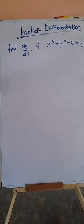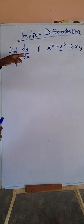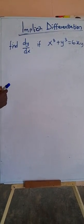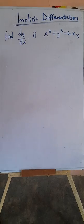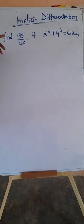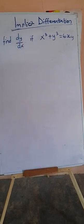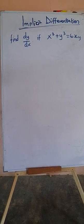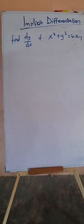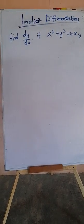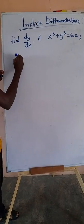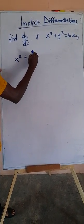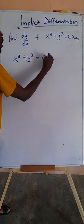There's another question here: find dy/dx if x cubed plus y cubed is equal to 6xy. This question is from a University of Cape Coast terminal exam question, and we'll use implicit differentiation to solve it. So we have x cubed plus y cubed equal to 6xy.